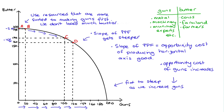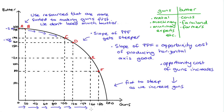The reason why the opportunity cost increases — I hinted at it before — is that as we increase the production of guns, we use those resources with the lower opportunity cost first. Eventually we run out of those resources, so we have to start utilising our other resources, which have a higher opportunity cost. So from E to F, for instance, we're increasing guns by 20 — from 160 to 180 — but we have to decrease butter by 40, from 120 to 80, to get those extra 20 guns. At this point we're having to use farmers, cows, and farmland to make guns — they're pretty bad at making guns and pretty good at making butter — so the opportunity cost of making guns is pretty high.